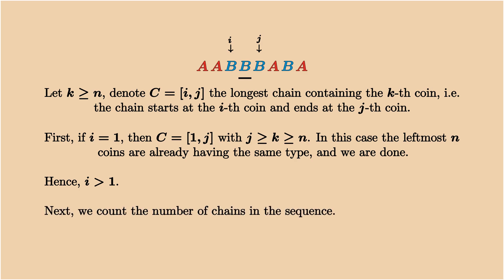The main idea is to count the number of chains in the sequence. In this example, initially we have 5 chains: AA, BBB, A, B, and A. After the move, the number is down to 4, and then it goes down to 3 and 2.